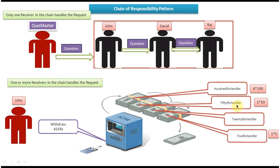The next handler is the 50-rupee handler, which gives one 50-rupee note. So 400 plus 50 equals 450 rupees dispensed so far, with 5 rupees remaining. The request is then sent to the 20-rupee handler. Since only 5 rupees remain, the 20-rupee handler won't perform any operation — it can't give a 20-rupee note for just 5 rupees. So it passes the request to the next handler, the 5-rupee handler.